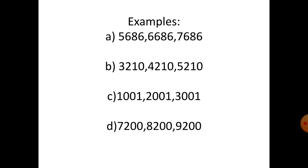Example B: three thousand two hundred and ten, plus one thousand — four thousand two hundred and ten, and then five thousand two hundred and ten. Example C: one thousand and one, two thousand and one, three thousand and one.